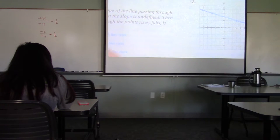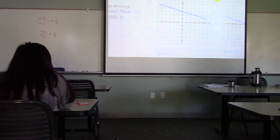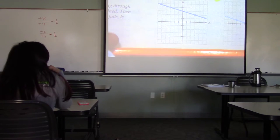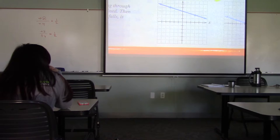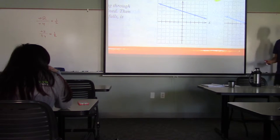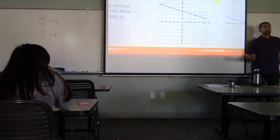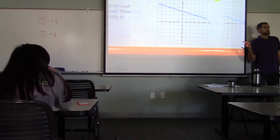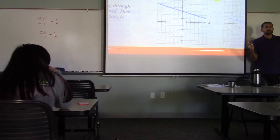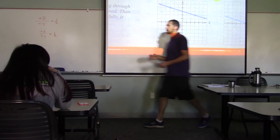Looking at problem 13: right away looking at this slope, I can tell the sign. What's the sign? Negative — because from left to right it's going down. So that's a big picture check. At the end of this problem, if my answer says three-fourths, I know it's wrong because the answer should be negative.